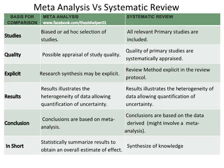In meta-analysis, possible appraisal of study quality. Whereas in systematic review, quality of primary studies are systematically appraised. In meta-analysis, research synthesis may be explicit. Whereas in systematic review, the review method is explicit in the methodical review protocol.